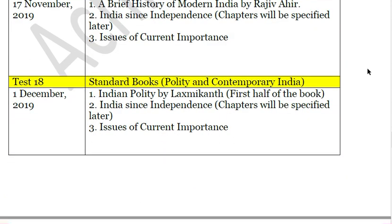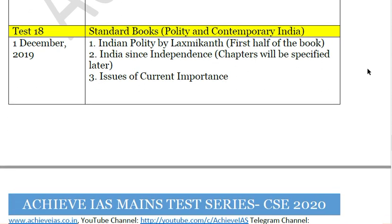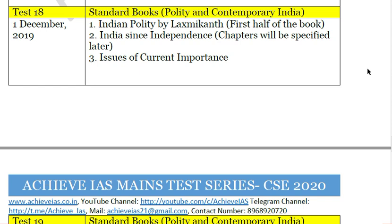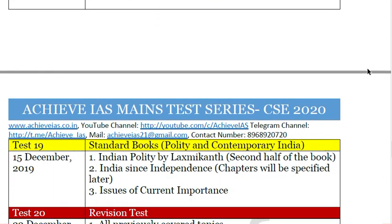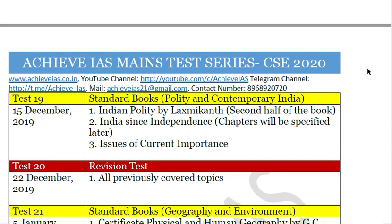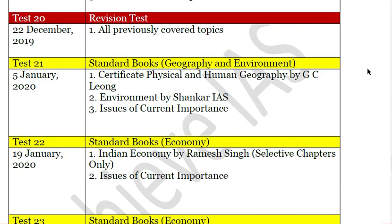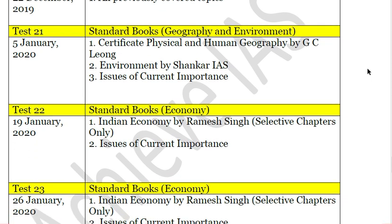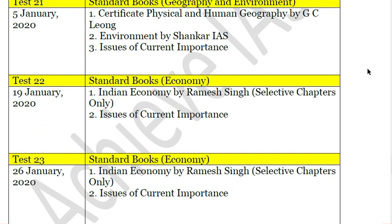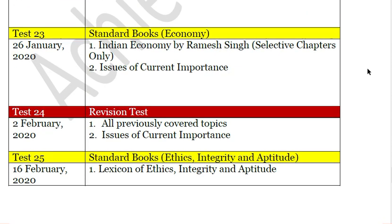Standard books for Polity include Indian Polity by Laxmikant, and India Since Independence. For Geography, the standard book is Certificate Physical and Human Geography by GC Leong, and Environment will be covered from the Shankar IAS booklet. For Economy, Indian Economy by Ramesh Singh will be followed, but only select chapters of importance will be covered.